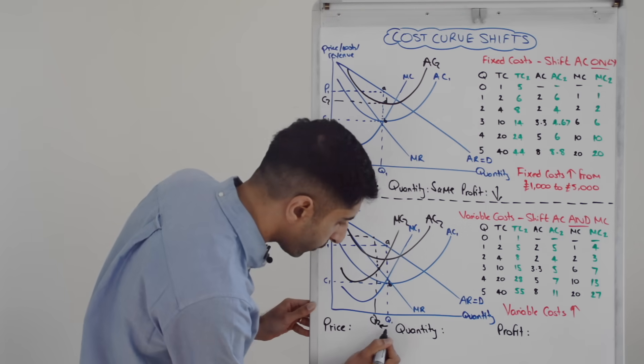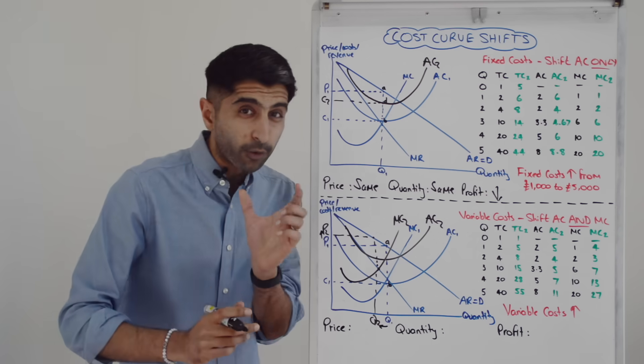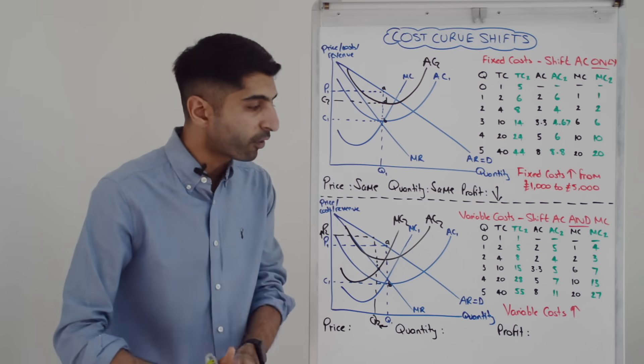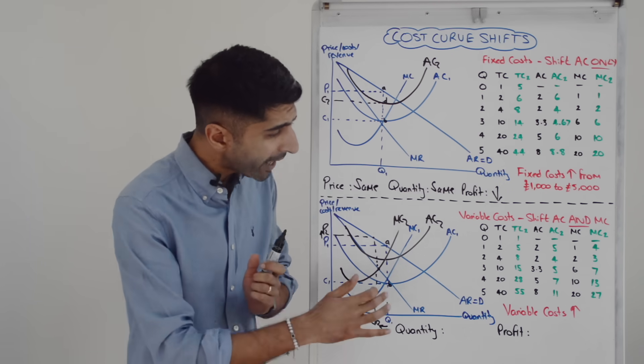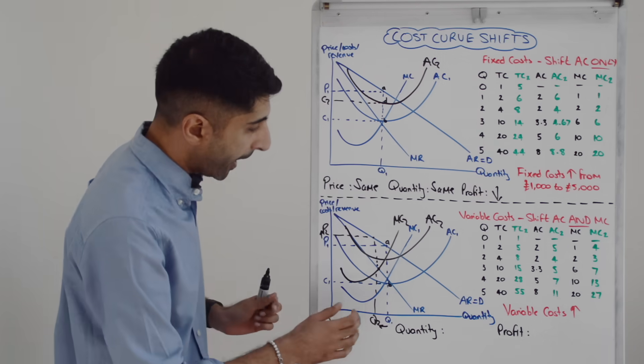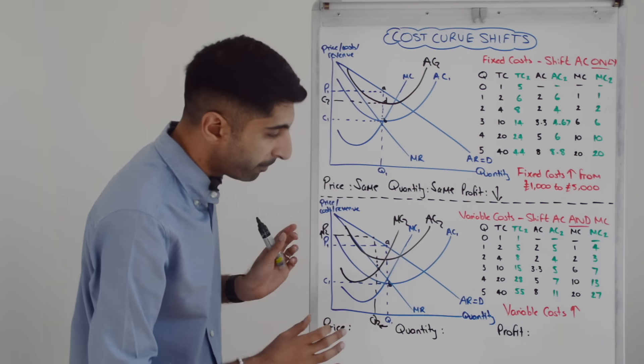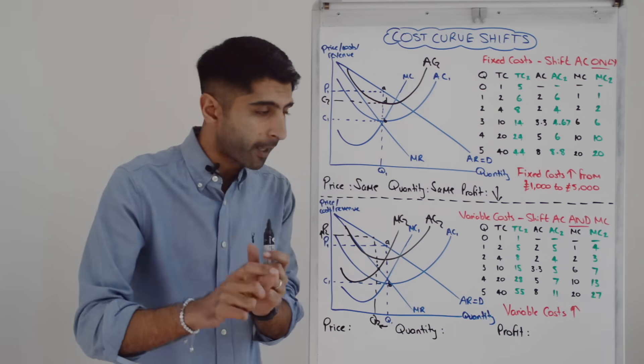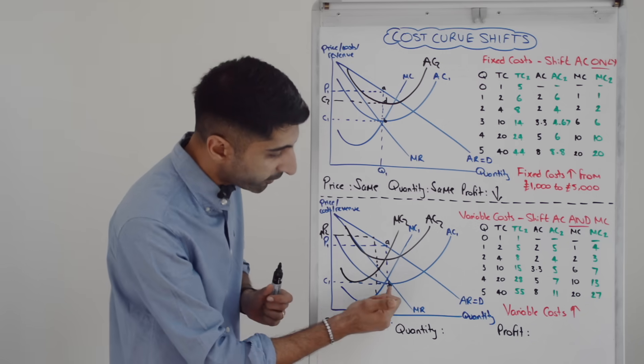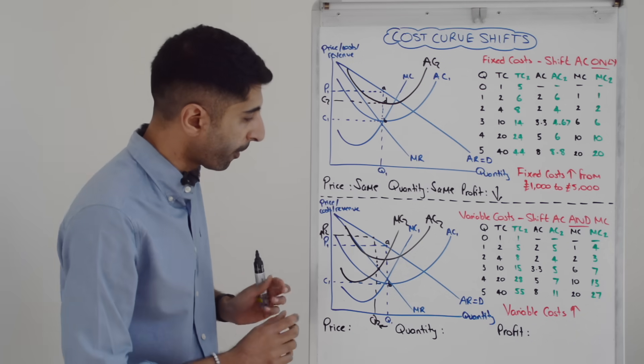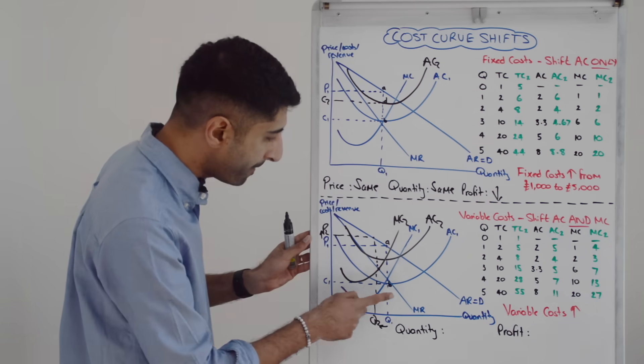So we can see that with a rise in AC and MC, there is a reduction in quantity and there is an increase in price. But we can also show a reduction in profit. So beforehand with MC1 and AC1, AR was at A, AC was at B. So supernormal profit was being made per unit of A to B. Multiply that by Q1, we got a supernormal profit box of P1, A, B, C1.